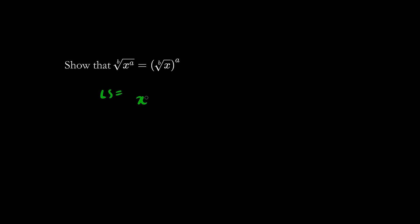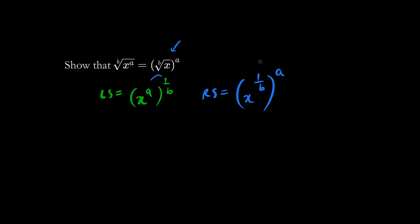Let's show that this expression is true. The left side equals x to the a, all to the 1 over b. The right side equals x to the 1 over b — the bth root of x — all to the a. We multiply the exponents: the left side gives x to the a over b, and the right side also gives x to the a over b. Indeed, the left side equals the right side.